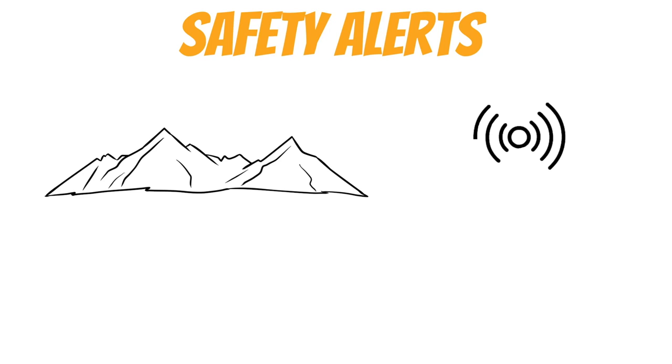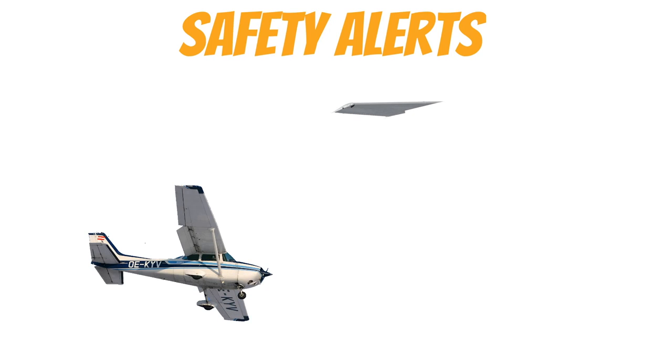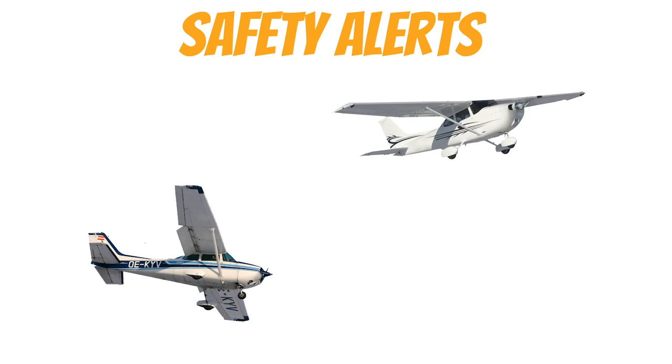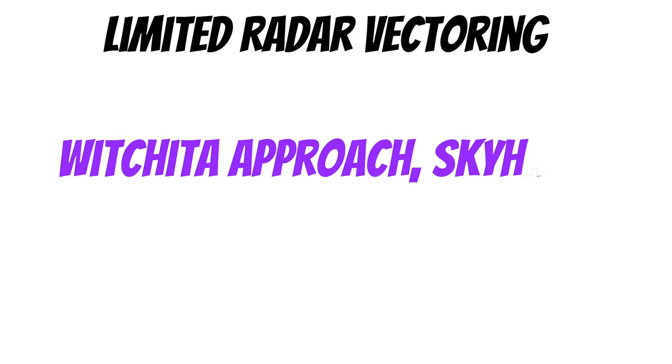ATC can also offer safety alerts, which are mandatory for them to give you when you're under radar services. If they think you're getting too close to terrain or an obstruction, they should be alerting you — and they should also alert you if an airplane is getting dangerously close to you. The AIM says they will offer the pilot an alternative course of action. Keep in mind that air traffic control is usually great at their job, but ultimately the responsibility of not hitting other airplanes rests solely on you — keep your eyes outside. For VFR traffic, you can also request limited radar vectoring; use it sparingly, but it's there if you get yourself lost.